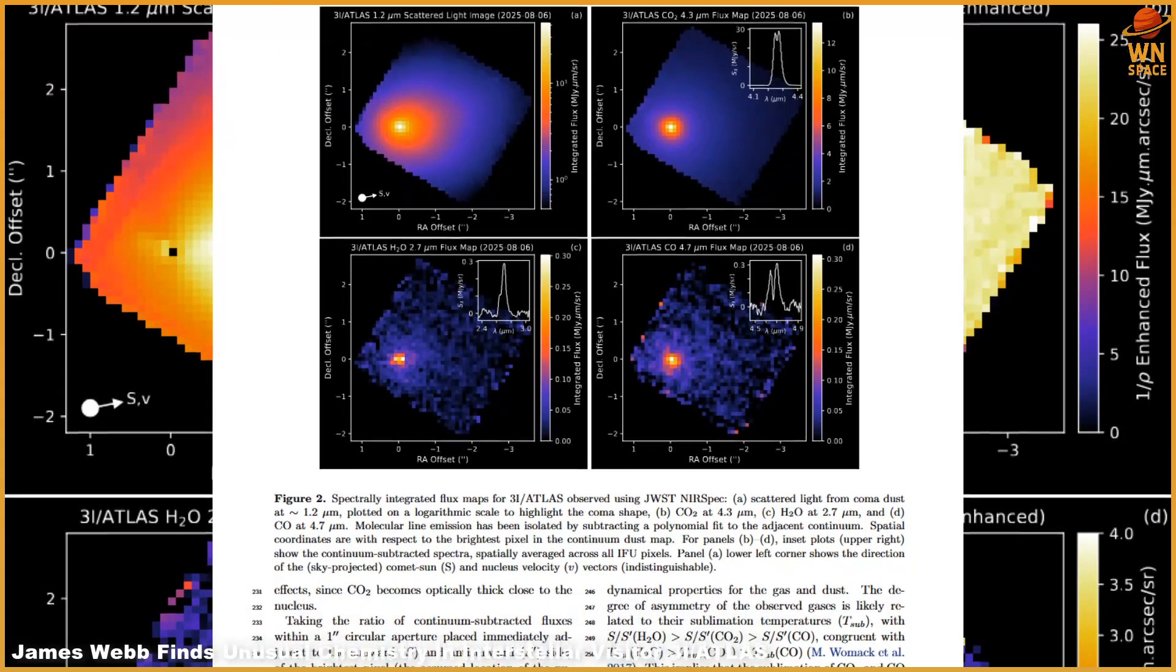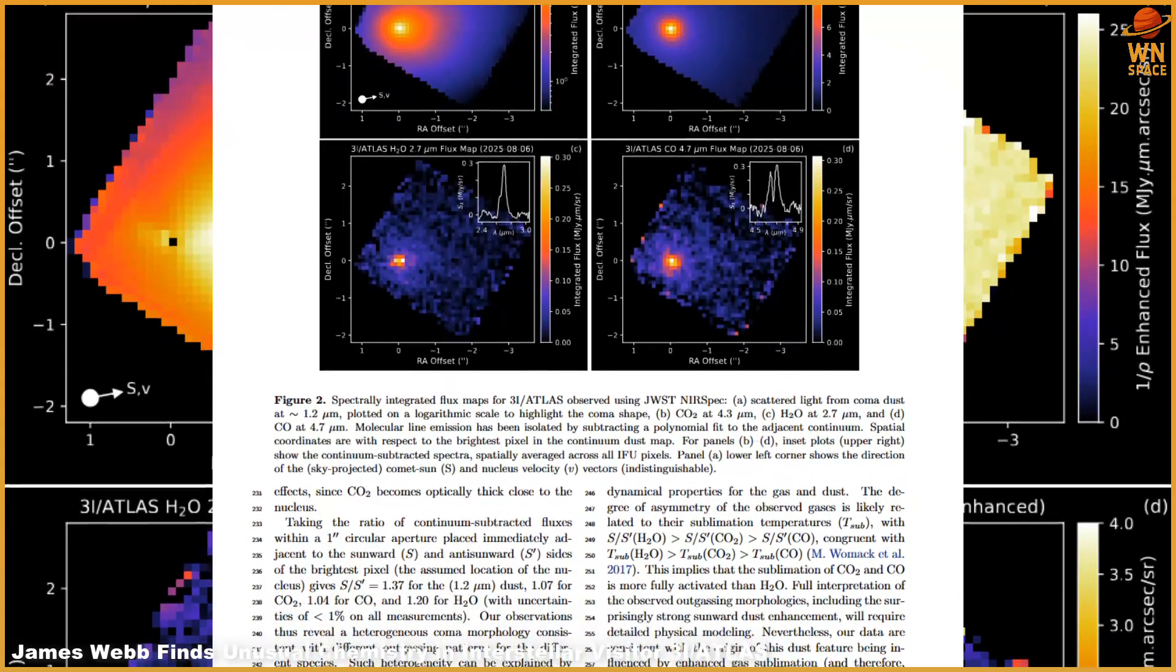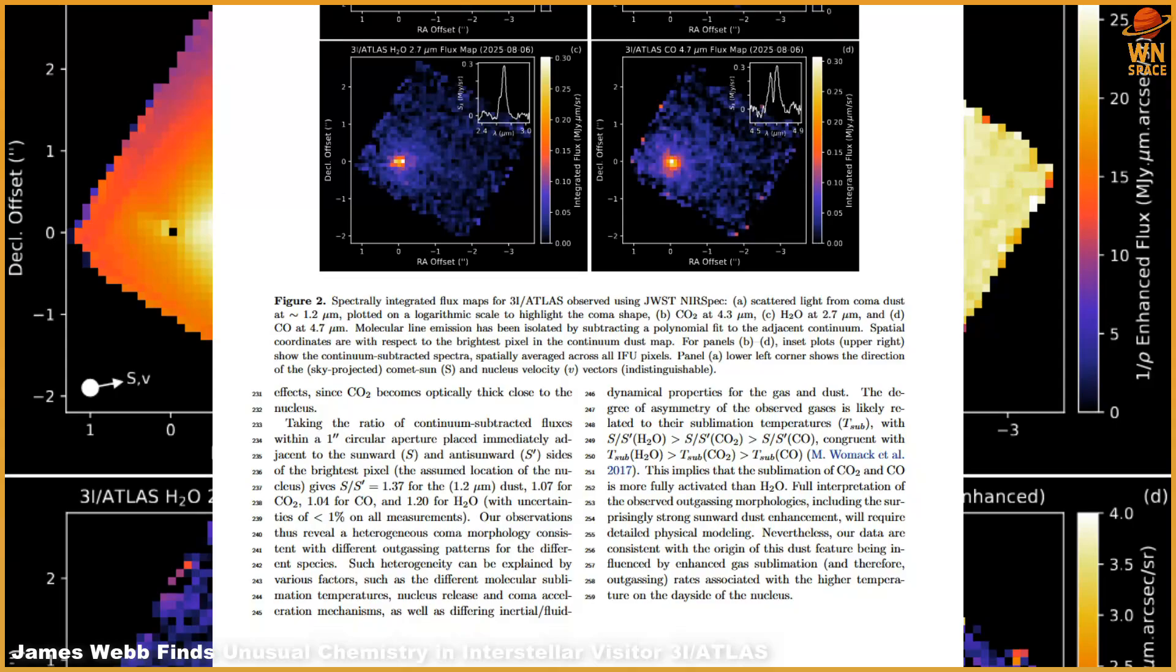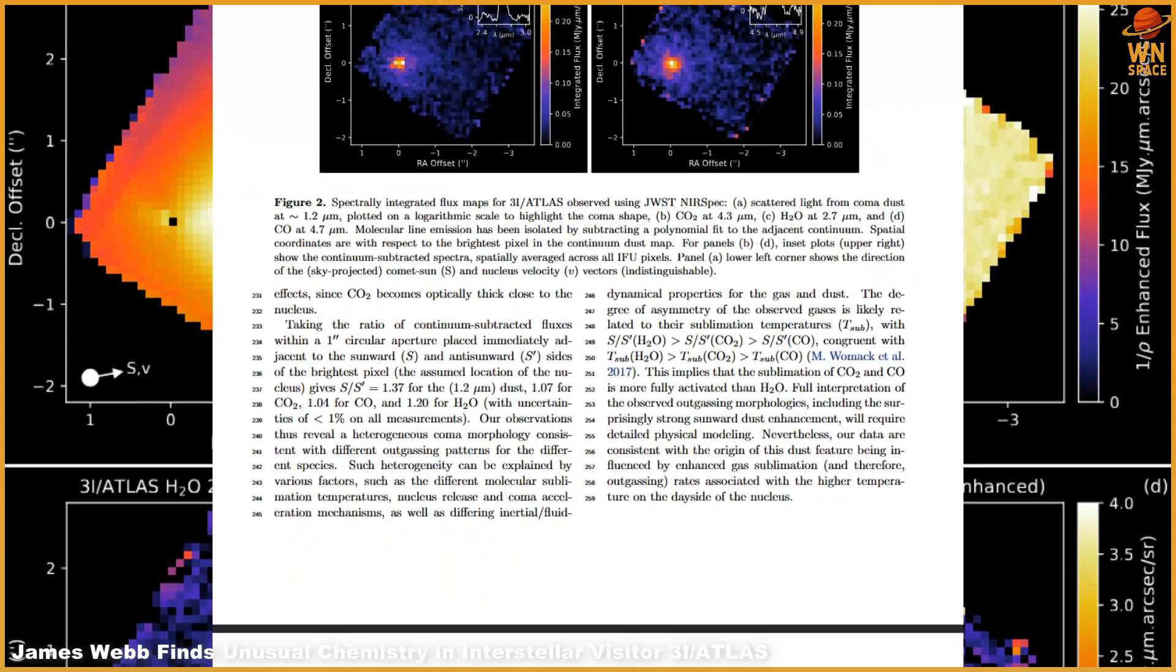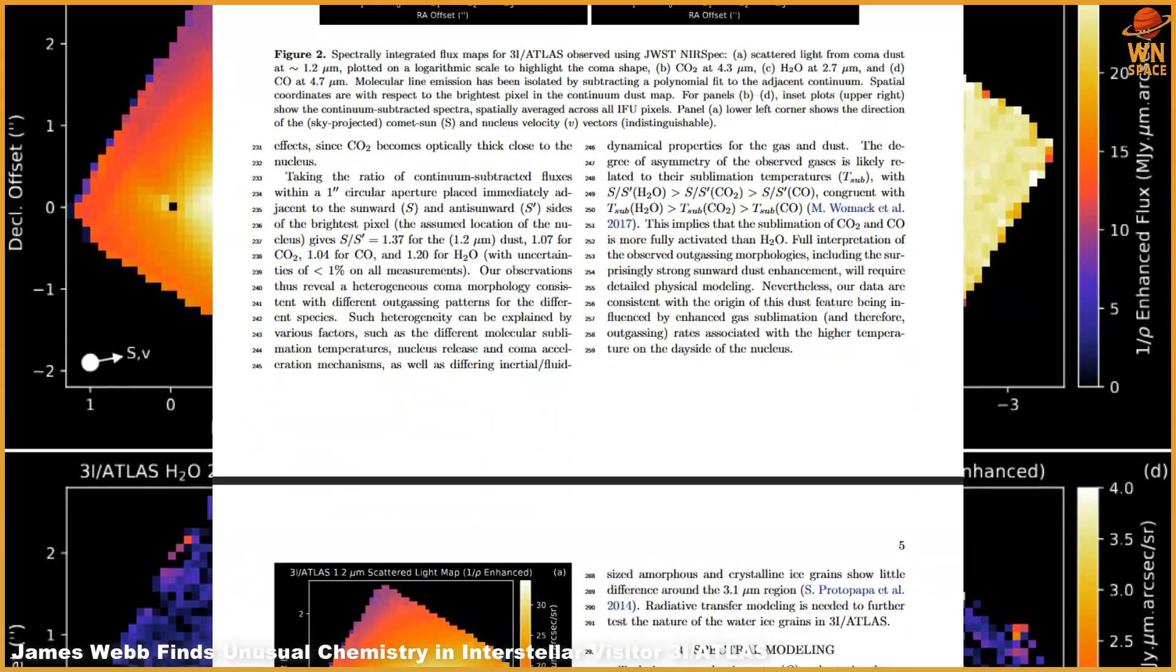This unusual chemistry suggests that 3I Atlas either formed in a very different environment, perhaps near the CO2 ice line in its home system, or that it has been heavily altered by exposure to interstellar radiation over billions of years.